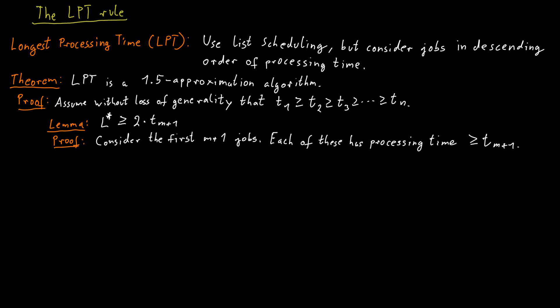And that means we have m plus 1 many jobs, and each of them has a processing time of at least t_{m+1}. But we only have m machines, so at least two of those jobs have to be placed on the same machine by the pigeonhole principle.